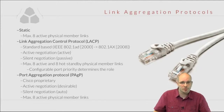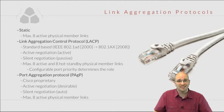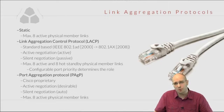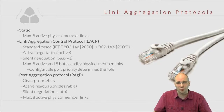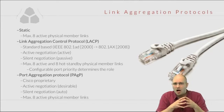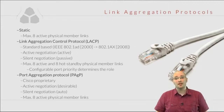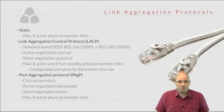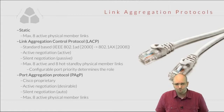Link aggregation on Cisco switches can be configured using three methods. The first is static configuration — ports are simply bundled into a port channel with no negotiation with the remote side. Cisco calls this mode 'on'. With static configuration, you can have up to eight ports in a bundle, all active. The alternative is dynamic negotiation using protocols like LACP, the Link Aggregation Control Protocol, or Port Aggregation Protocol, which is Cisco's proprietary protocol.